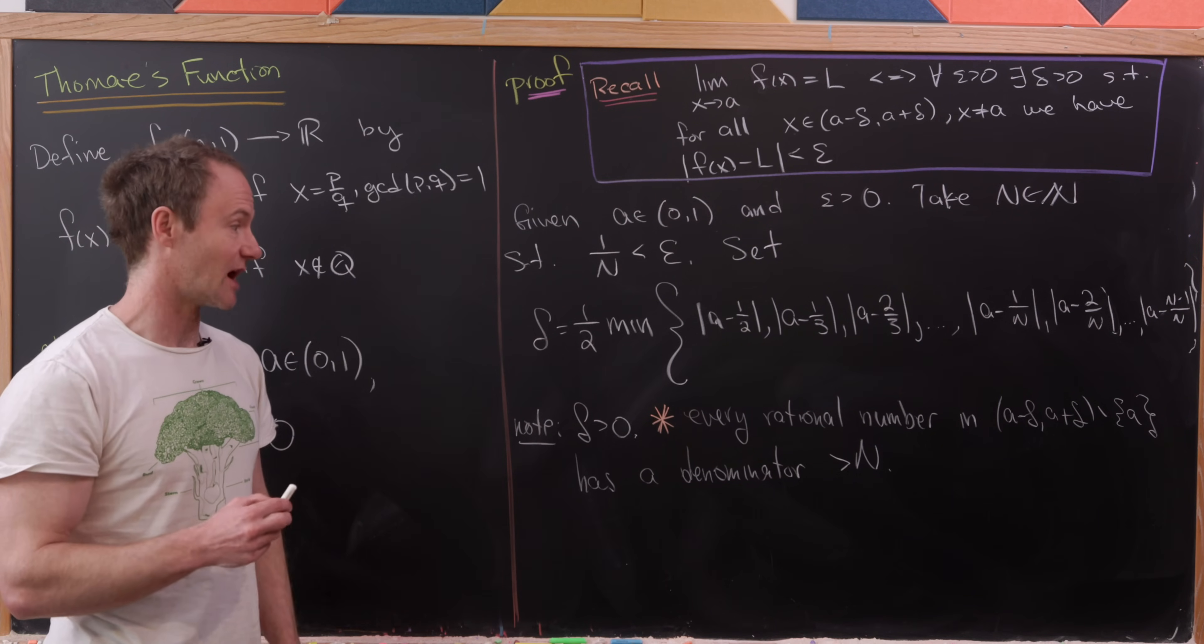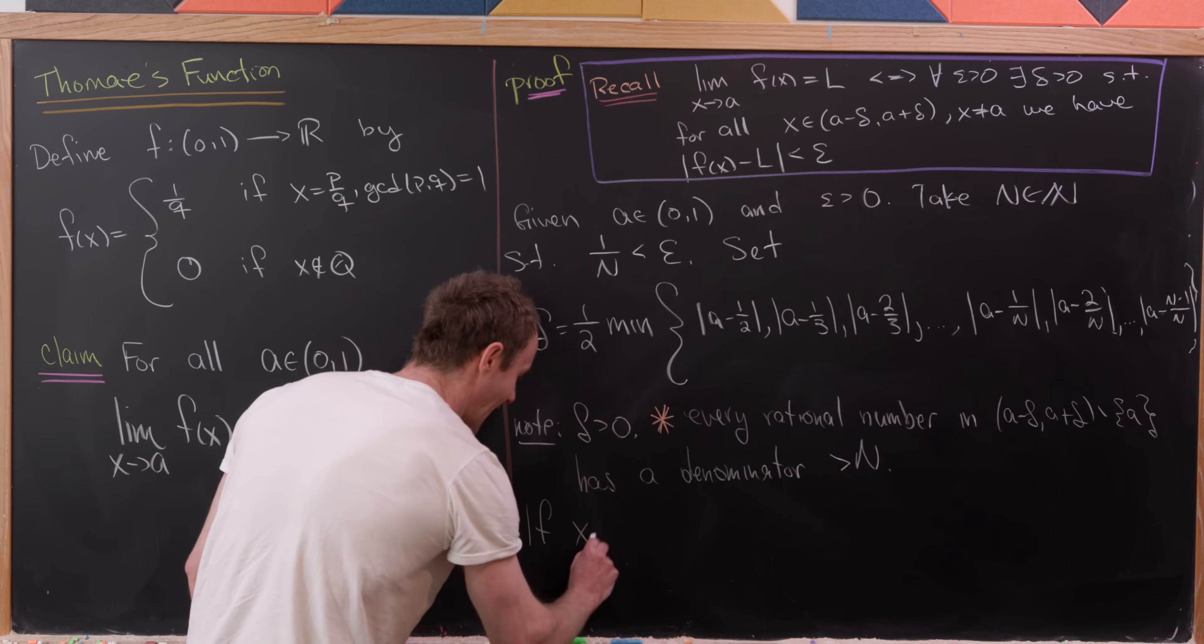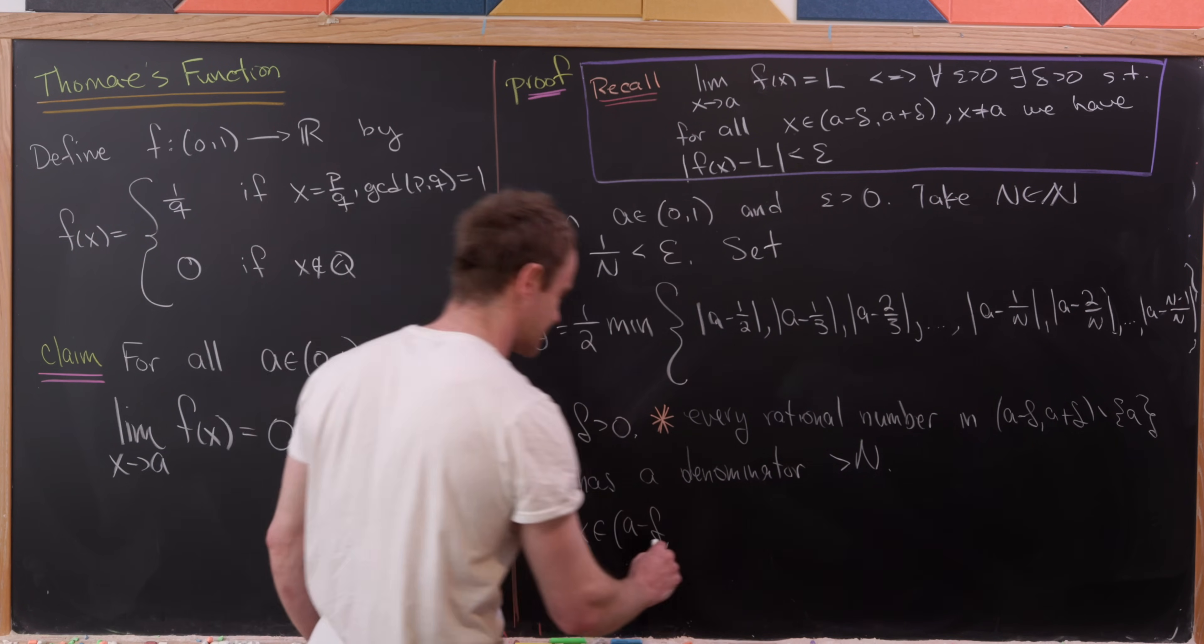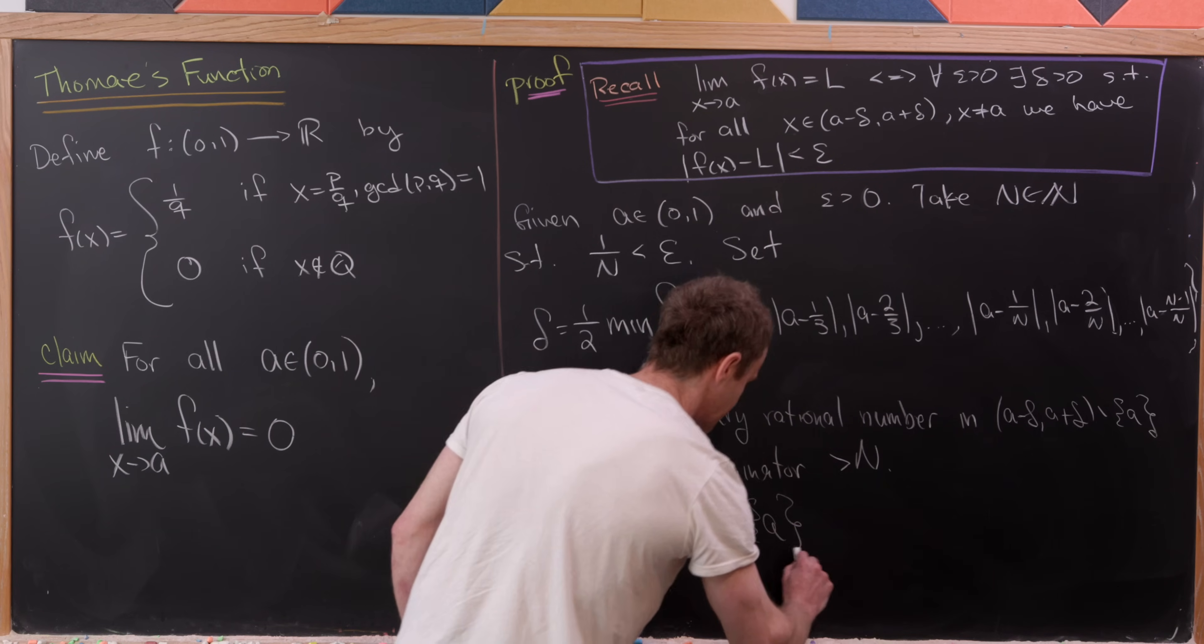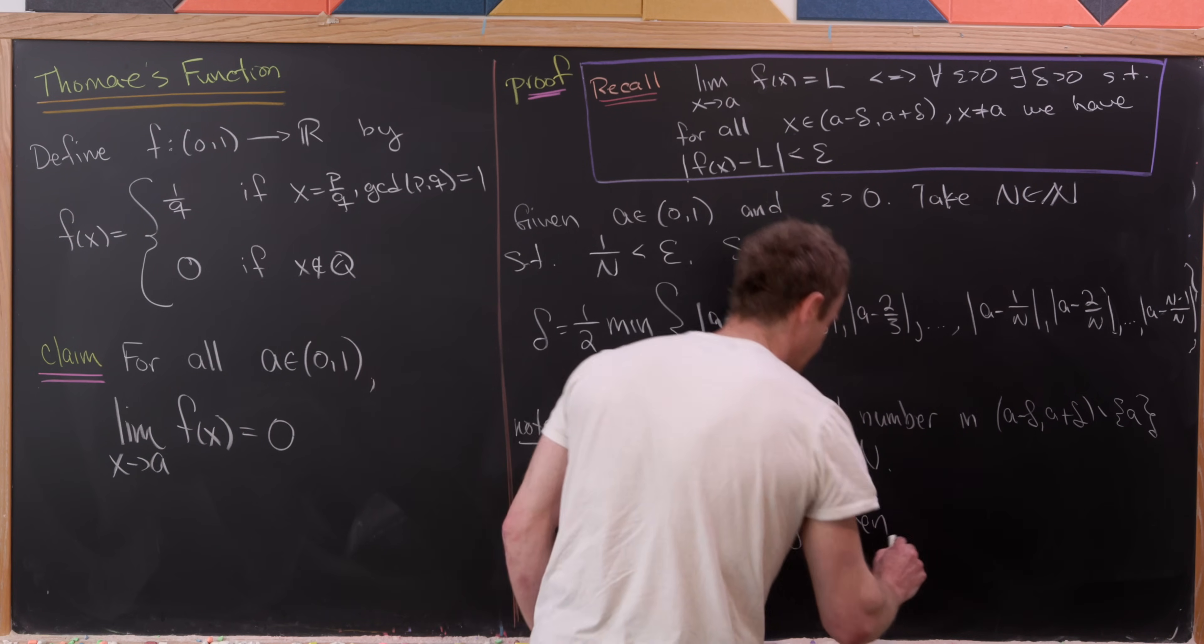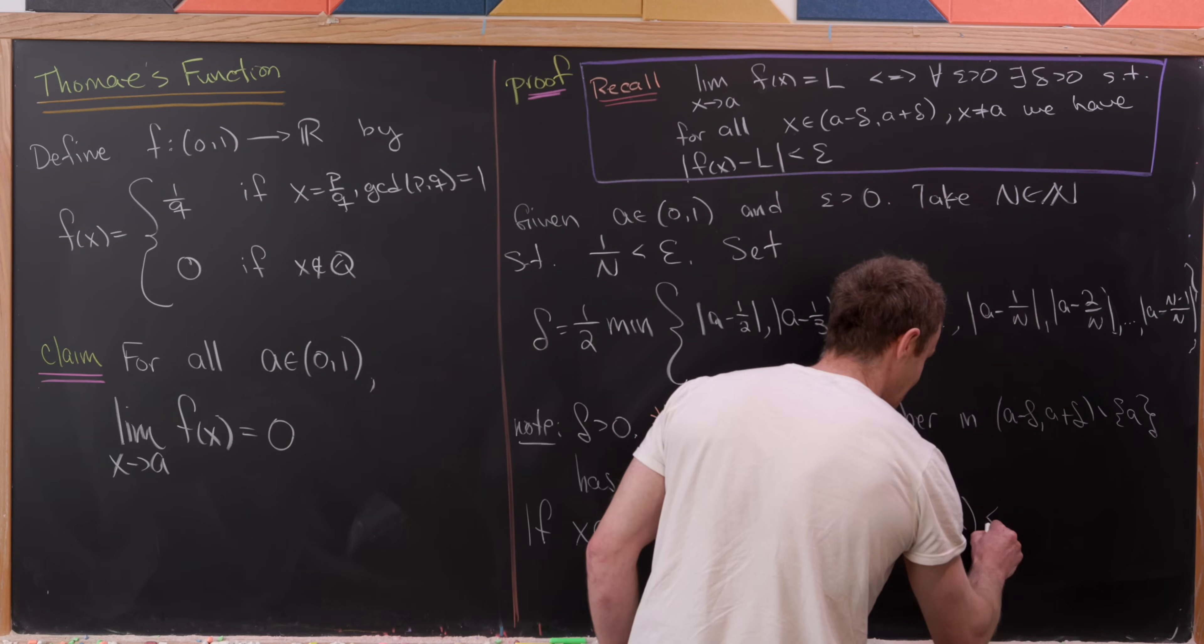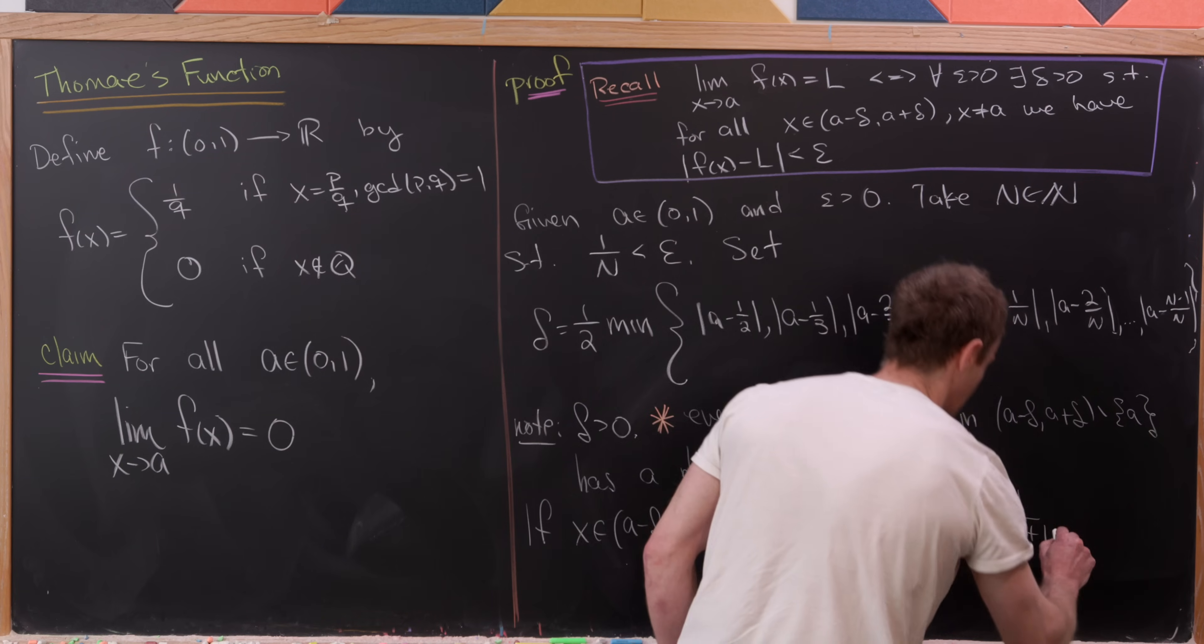Okay, so anyway, that gets the job done there. And so now let's notice the following. If X is on our deleted open neighborhood, X minus delta, or sorry, A minus delta to A plus delta minus the singleton A, then F of X is going to be less than or equal to 1 over N plus 1.